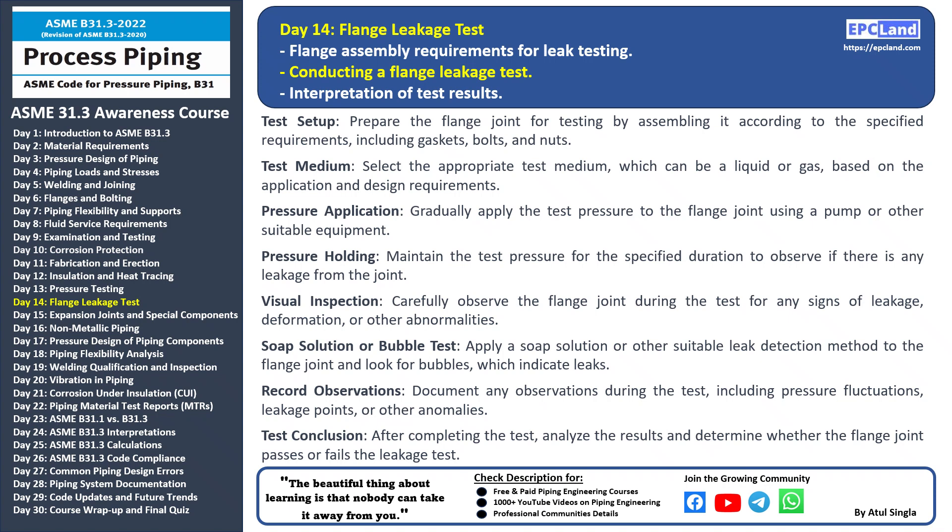Visual inspection: carefully inspect the flange joint for any signs of leakage, deformation, or other irregularities. Soap solution or bubble test: apply a soap solution or use a bubble test method and look for any bubbles forming, as they indicate potential leakage points. Record observations: keep a record of pressure fluctuations, locations of leaks, or any other significant findings. Test conclusion: once the test is complete, analyze the results and determine whether the flange joint passes or fails the leakage test.